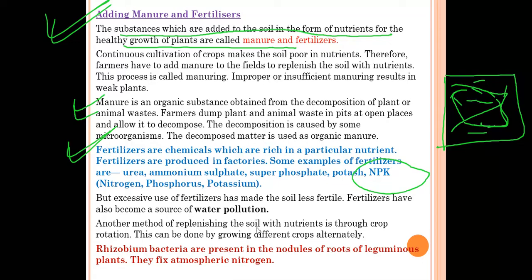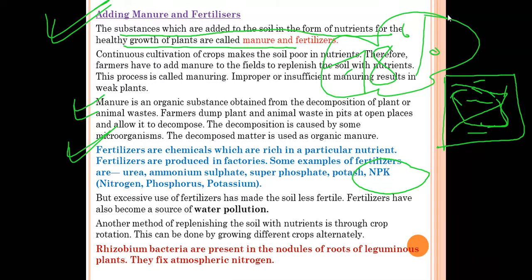Another method of replenishing soil nutrients is crop rotation — growing different crops alternately. For example, in one season the farmer grows one crop and the next season a different crop, which replenishes soil nutrients. Rhizobium bacteria present in the root nodules of leguminous plants like pulses fix atmospheric nitrogen. In the air, 78% nitrogen is present, but plants cannot use it directly; rhizobium bacteria convert it into nitrates and nitrites, which plants use for healthy growth.